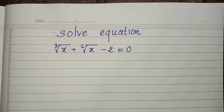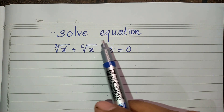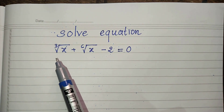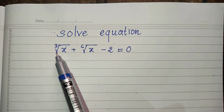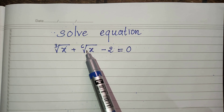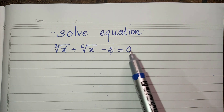Hello everyone, welcome to my YouTube channel. Today I have one exercise — an equation: the third root of h plus the sixth root of h minus 2 equals 0.